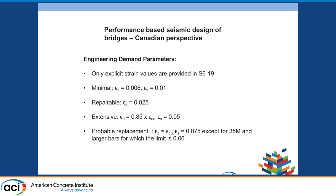In the 2014 version we had the steel rebar strain limit set at 0.002 for the minimal damage state. As soon as I saw that I was alarmed, because you just cannot design to that. Through UBC research we found it was governing everywhere — for a 475-year event at 0.002, you were having to put in about 6% rebar. So we were able to change that to 0.01, which is very similar to what the AASHTO guidelines were showing.